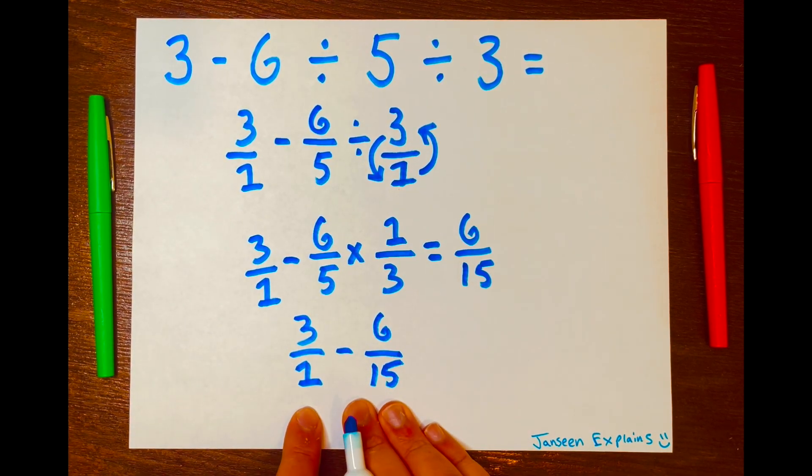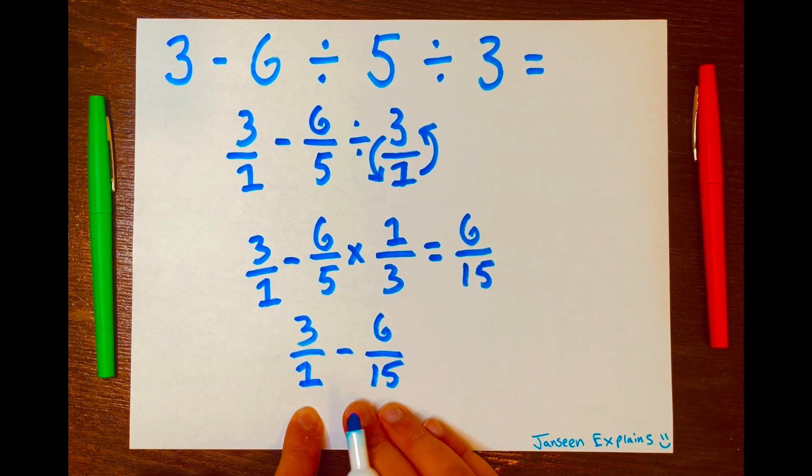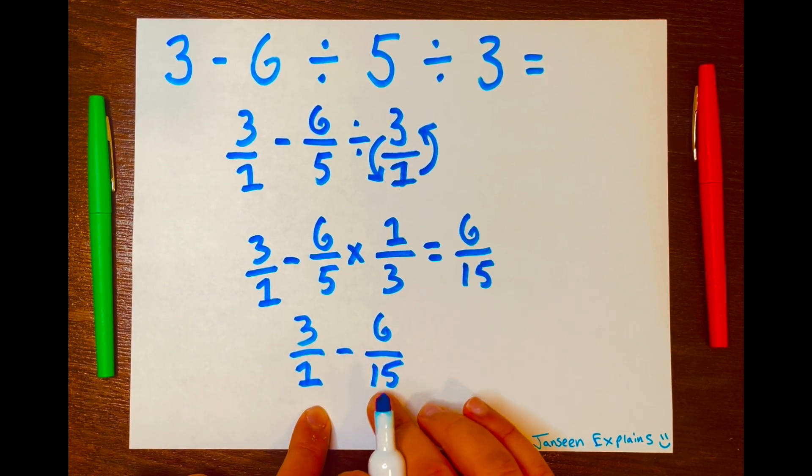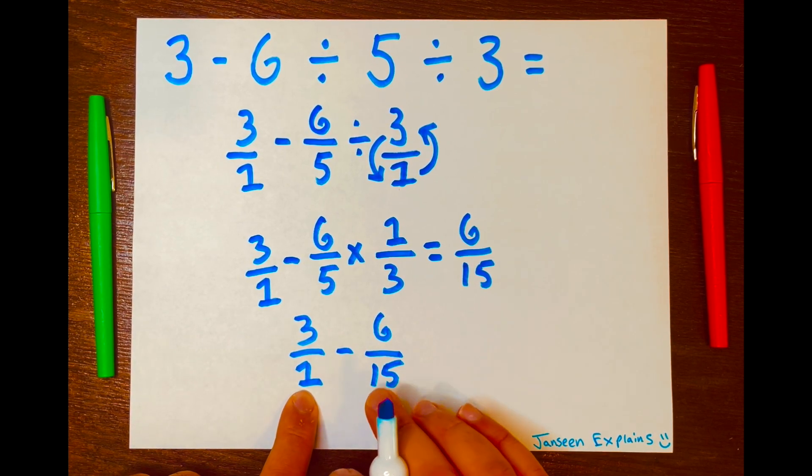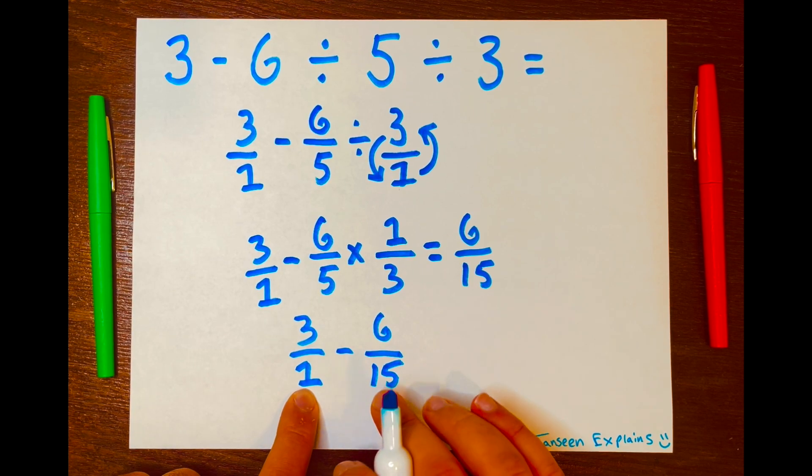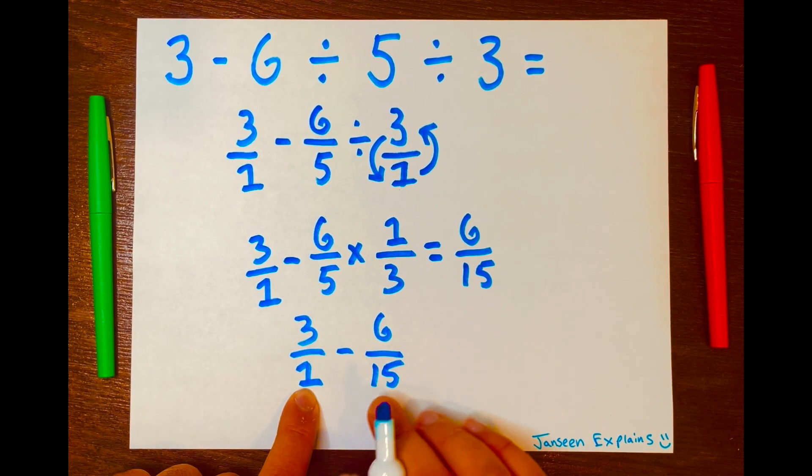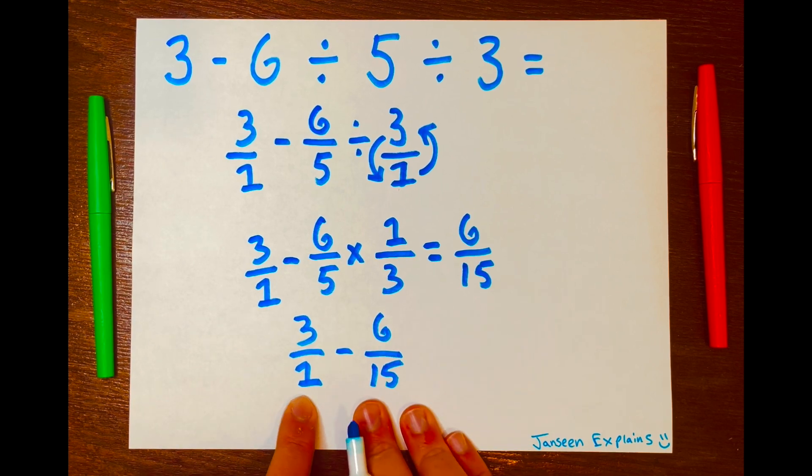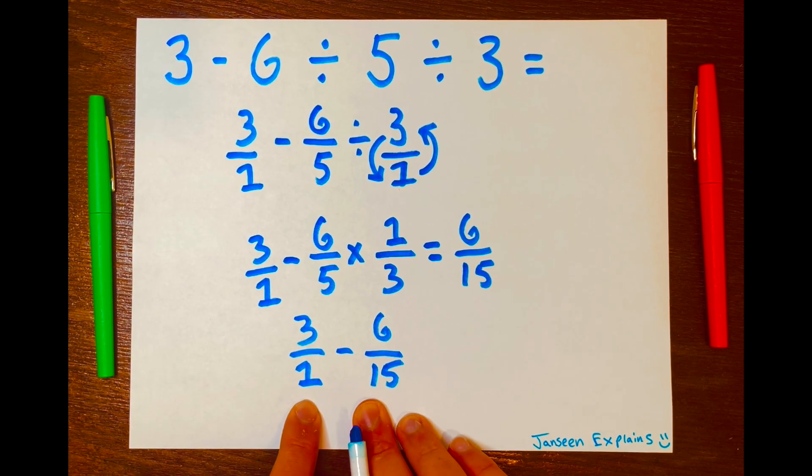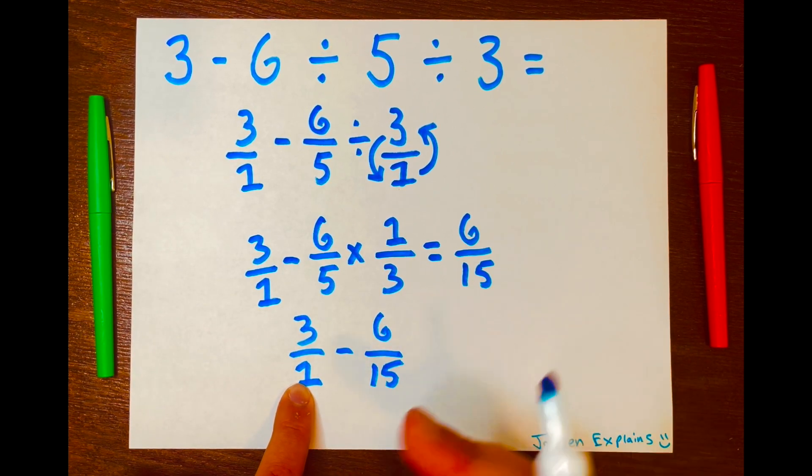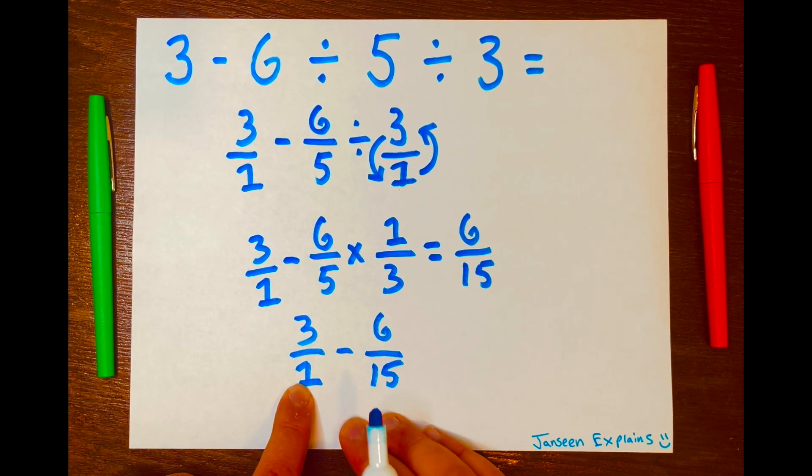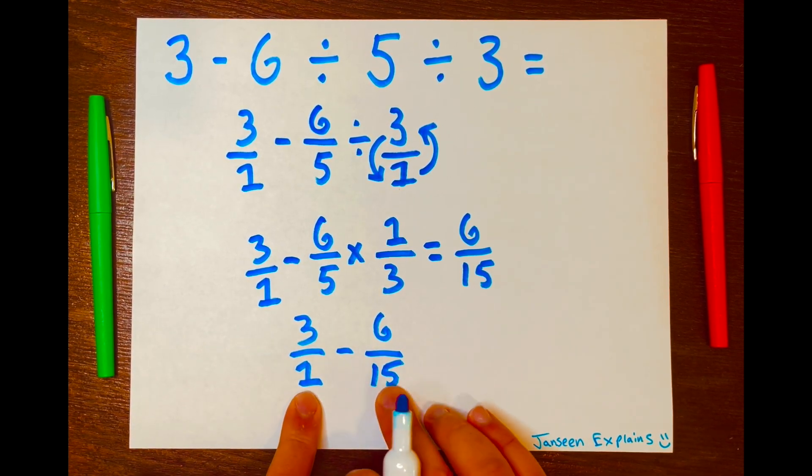And now we have two fractions that are unlike fractions. They're called unlike fractions because the denominators are different. We need to find the new common denominator to solve this problem when subtracting two unlike fractions. So all you have to do is multiply 1 times 15, and that is 15. That'll be your new common denominator, which is the product of the two denominators.